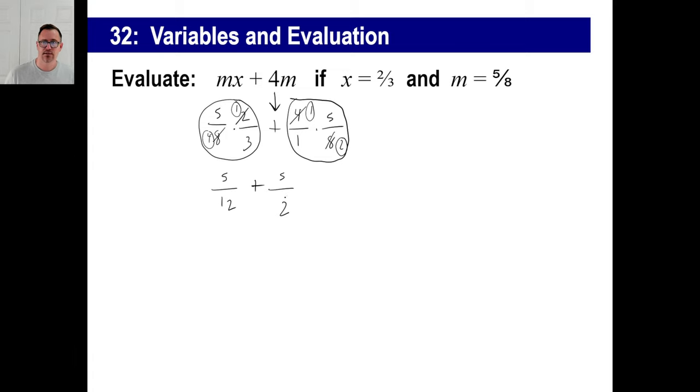So 5/12 plus 5/2. Well, let's take a look. What do we got here? We have to have a common denominator. So let's make this 12 both times. So 5/12 just stays there. This will also be 12. So 2 times 6 is 12. 5 times 6 is 30. So we have 35 over 12. And if you wanted to do a mixed number, 12 goes into 35 two times with 11 left over. There you go. Piece of cake.